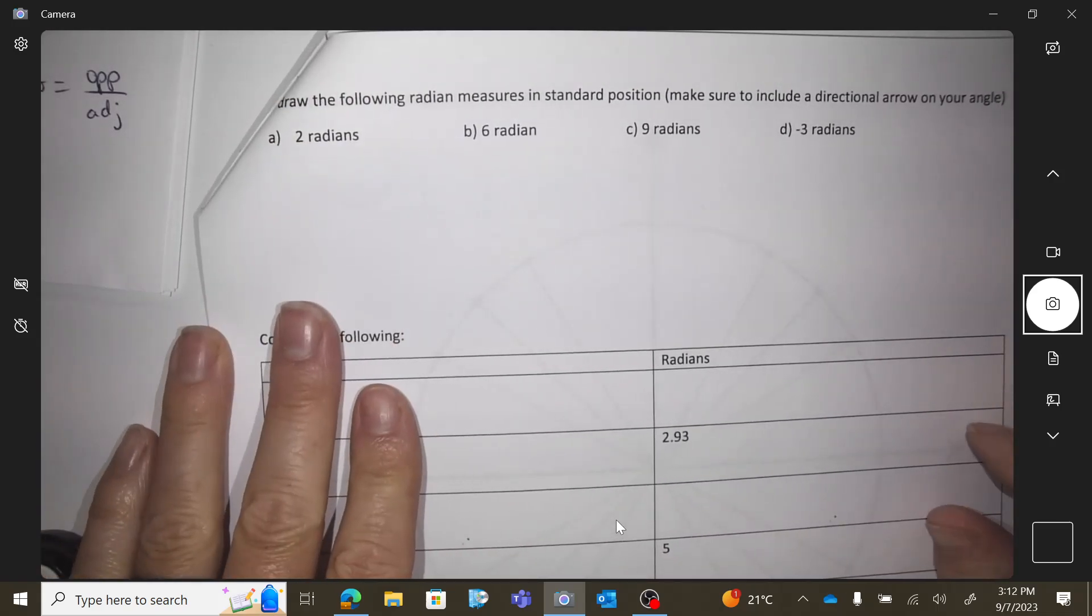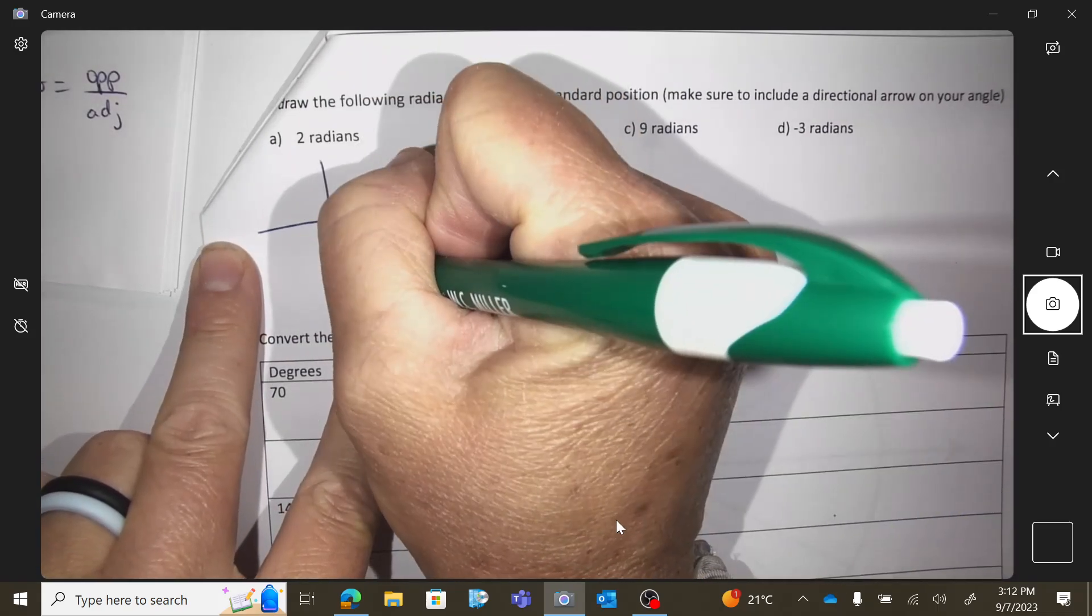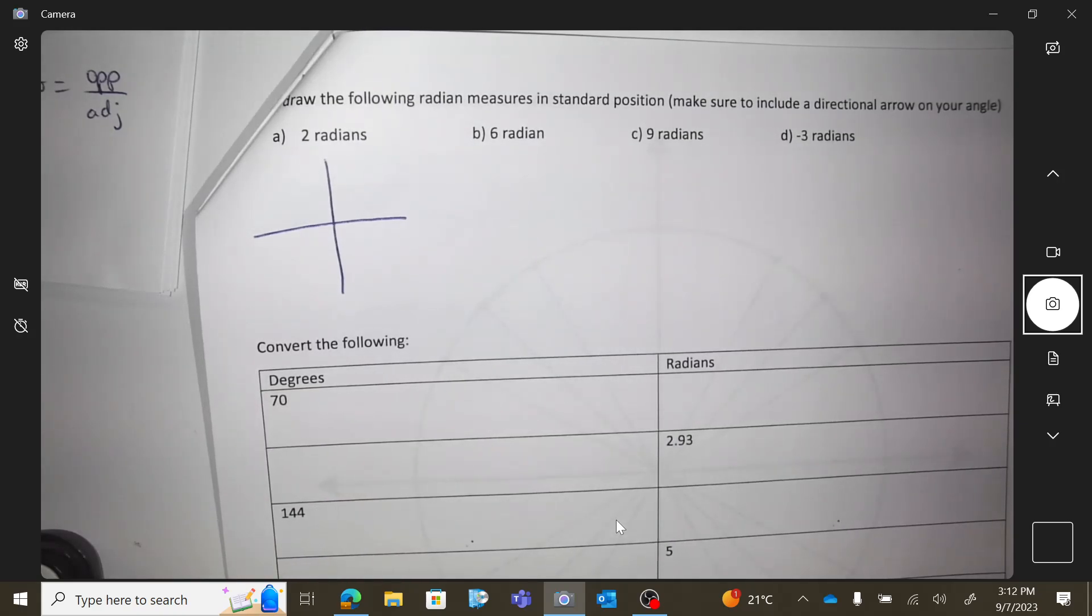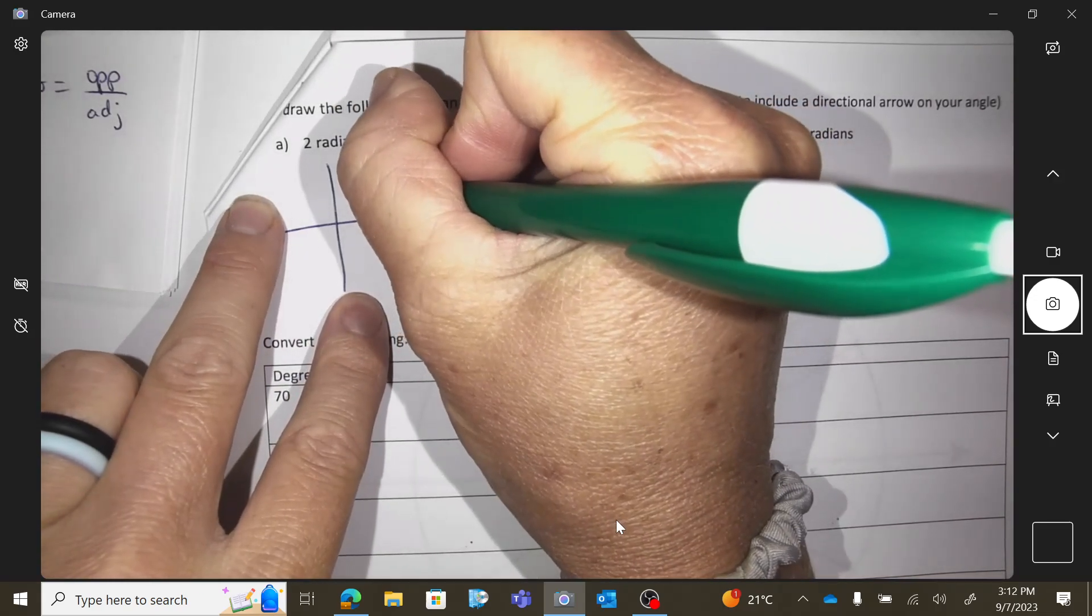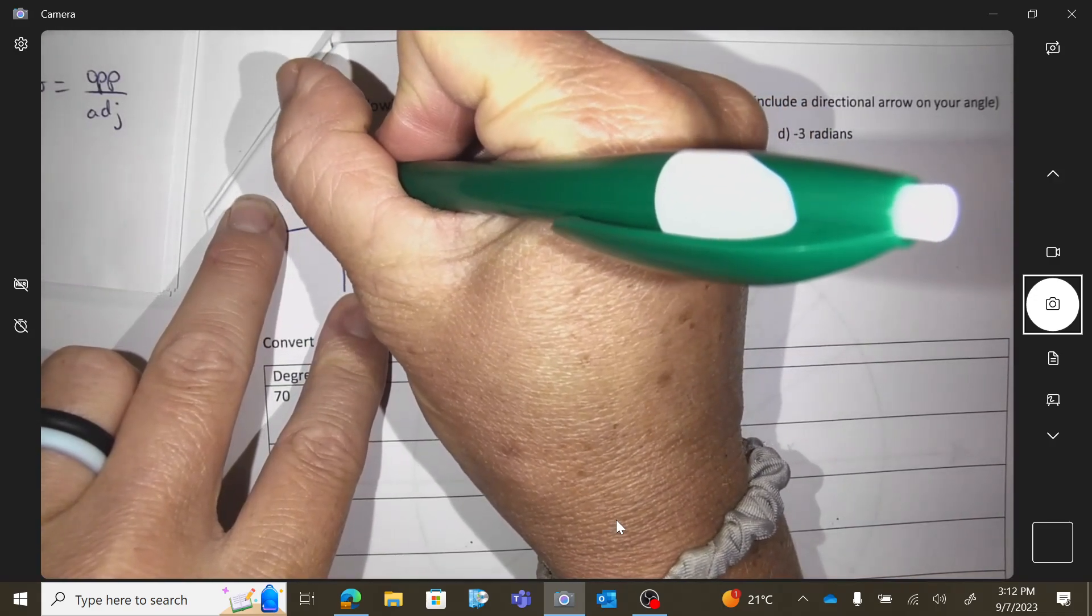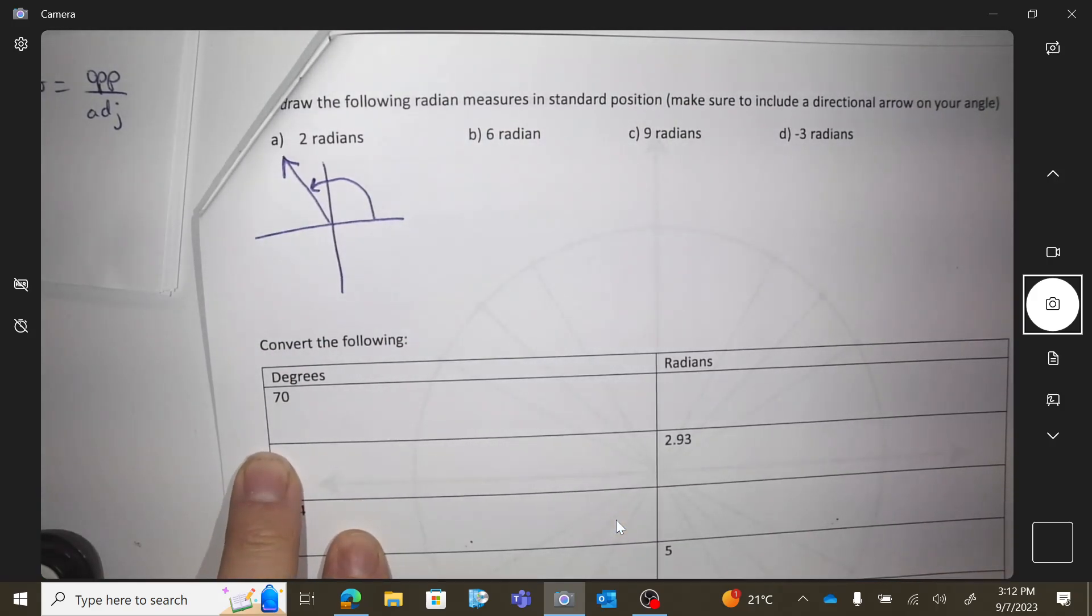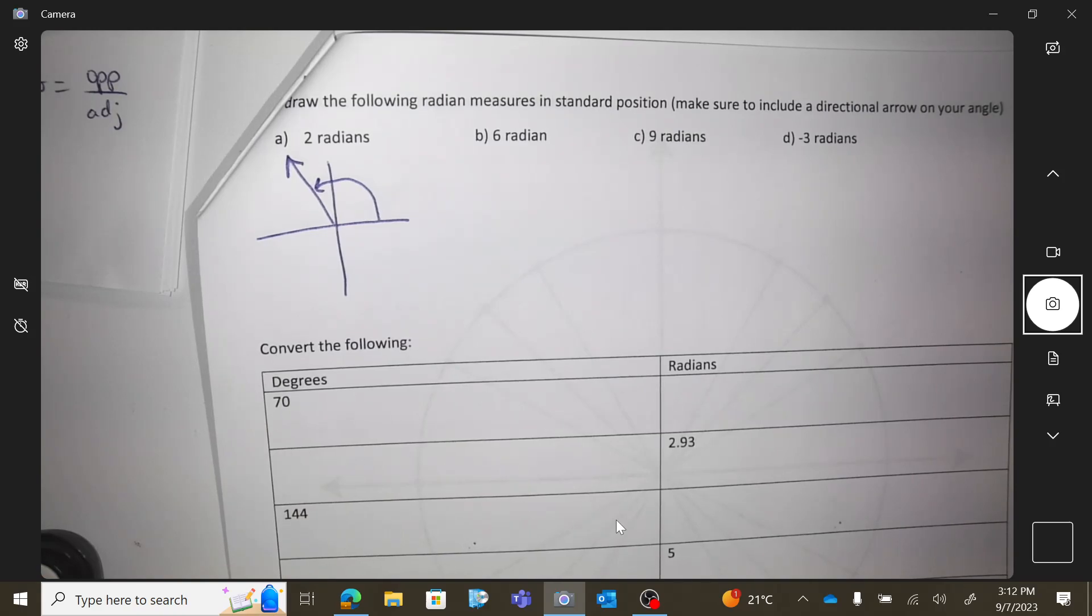Okay, so could you draw me 2 radians? So like I said, it's nice to have 1.5-ish in your head. So 2 radians would travel and land past the 90-degree marker, right, because the 90-degree marker is 1.5-ish.